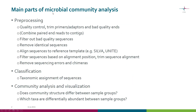The bioinformatics of microbial community analysis consists of three major parts: pre-processing, classification, and finally the actual community analysis and visualization. In this course we will cover all these steps in detail. We start with quality control — how to remove primers, adapters, and bad quality read ends if they exist.